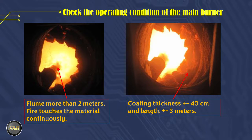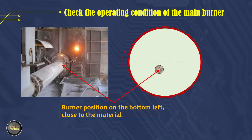We received information that previously this factory often had to stop the kiln because a thick coating was formed at the kiln outlet and ball coating was formed inside. The flume at the burner tip is more than 2 meters long — normally 0.5 of the burner diameters. This happens because the primary air flow is high and the air pressure is low, and the secondary air temperature is low. The burner position is in the lower left position, so the burner flame touches the material continuously.